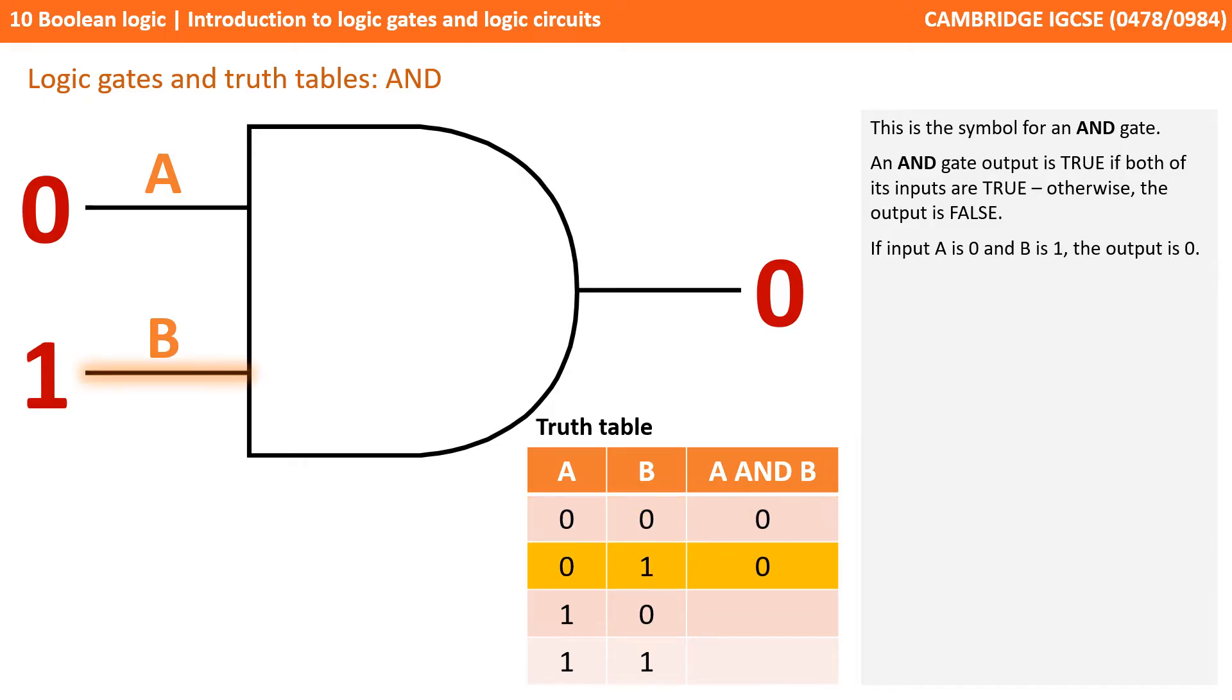If input A is 0 and B is 1, then the output is 0. If we flip this and turn A to 1 and B to 0, the output is 0. But if both inputs A and B are 1, then the output is 1.